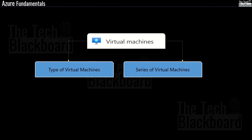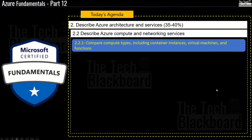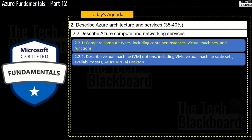There are virtual machines for every need you or your company has. Hello and welcome back to the Tech Blackboard. Today in episode 12 of Azure Fundamentals we are going to cover section 2.2.2, which is to learn about different types and series of virtual machines. We will then talk about virtual machine scale sets and availability sets.